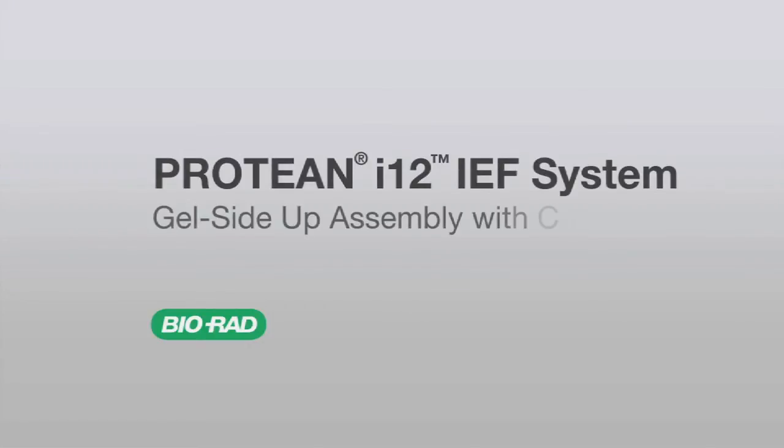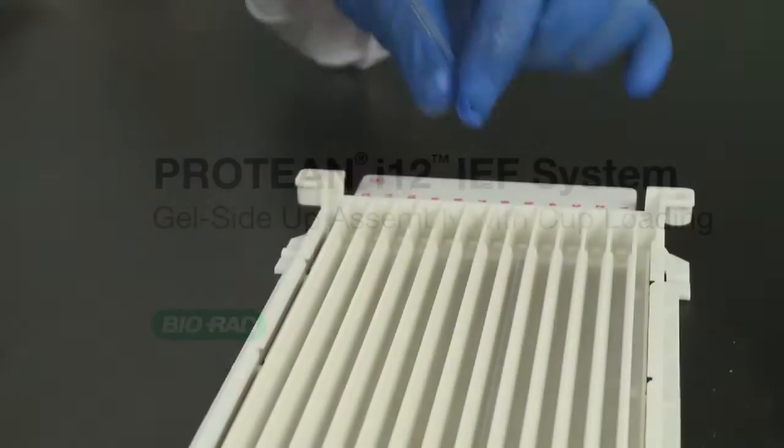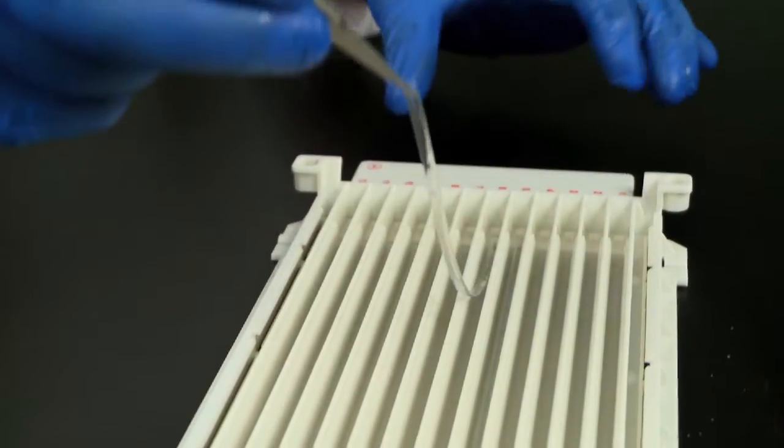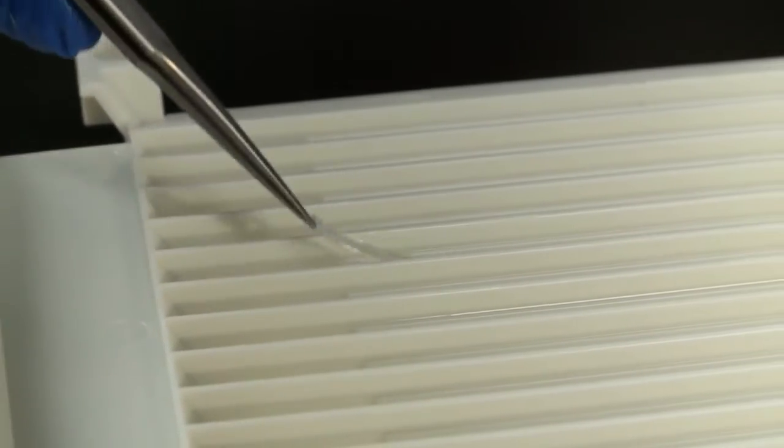To use sample loading cups with the Protein I-12, follow this setup procedure. First, place the rehydrated IPG strip gel side up in the focusing tray.